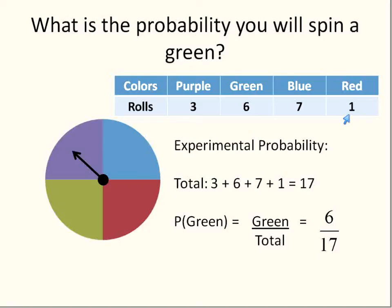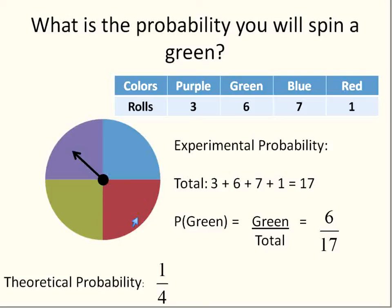Your chances of spinning red are very little — one out of seventeen according to this table. However, theoretically, each part of the wheel is exactly equal, so there's exactly a one-fourth chance of getting any individual color. In theory you should have an equal chance of each color, but in reality the experiment turned out differently. That's the difference between experimental probability and theoretical probability.